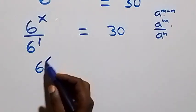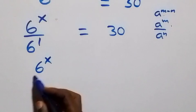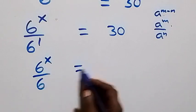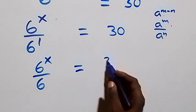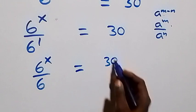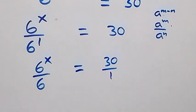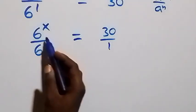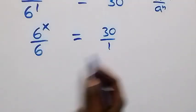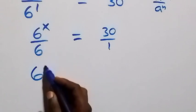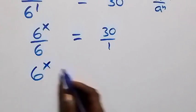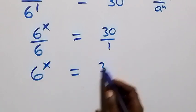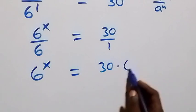This is the same thing as 6 raised to power x over 6, and equals 30 over 1. Then when we cross-multiply here, 6 raised to power x equals 30 times 6.